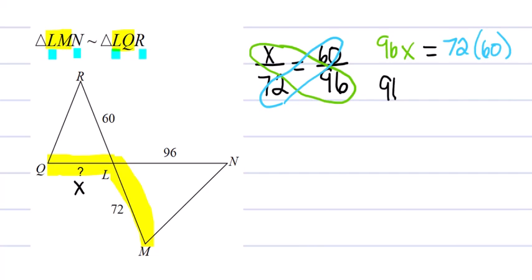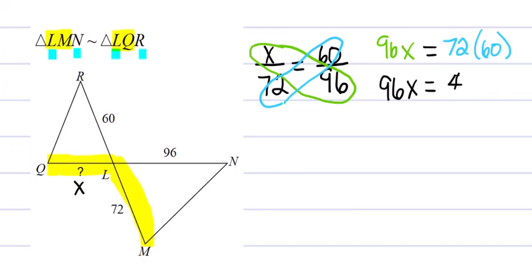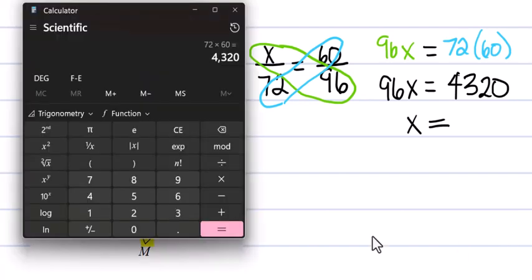96X equals 72 times 60, which is 4320. And then to solve for X, we're just going to divide that same number by 96 and we get 45.